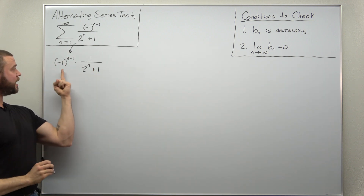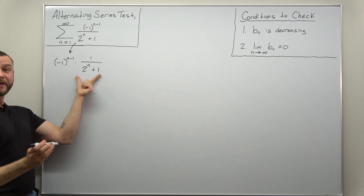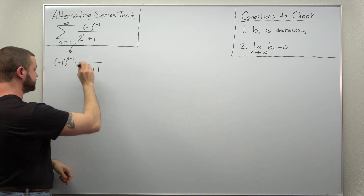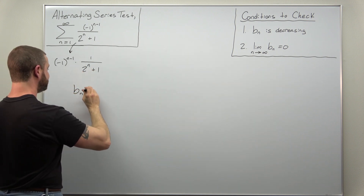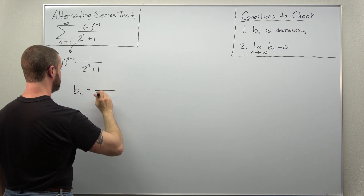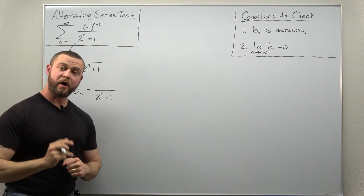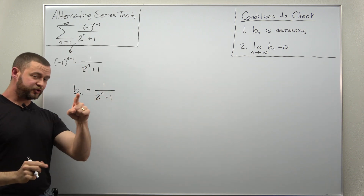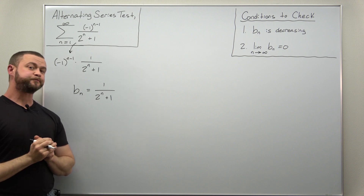Whatever's multiplying your alternating term, that's your B sub n. So here, we're going to identify B sub n as one divided by two to the nth power plus one.